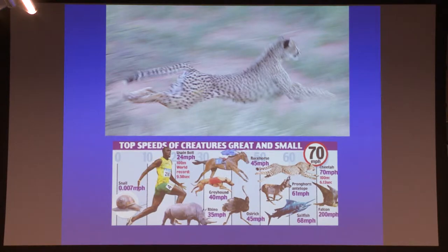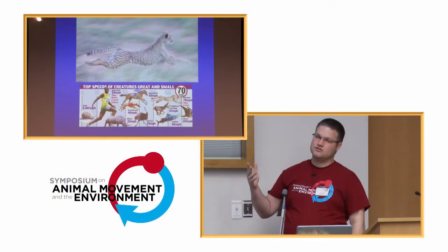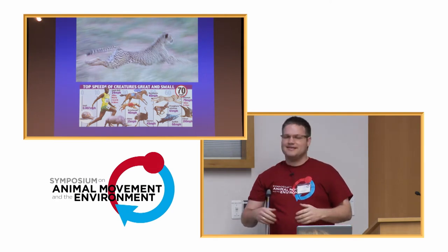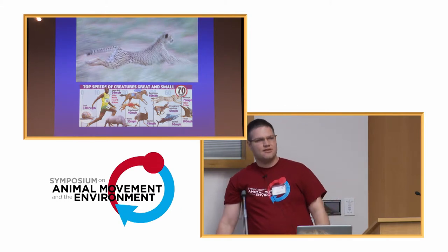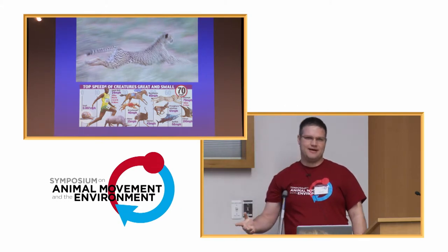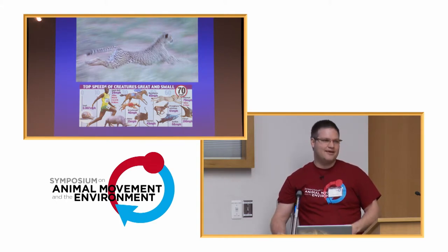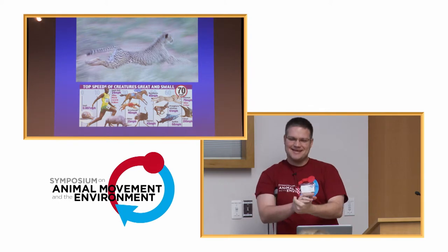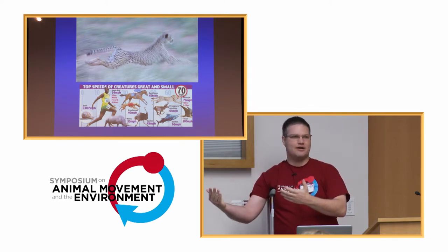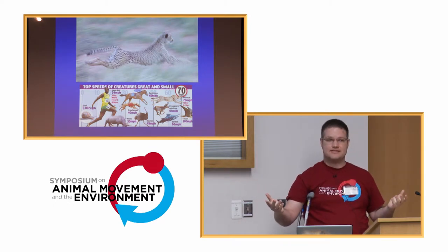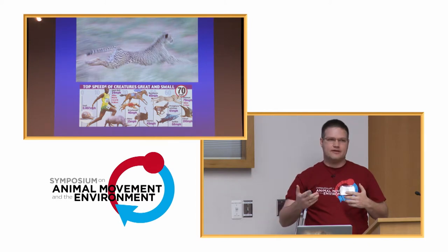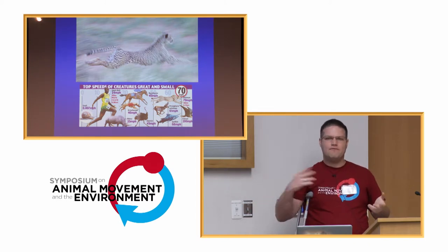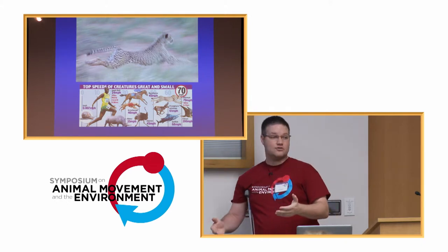We know cheetahs are fast — there are videos all over National Geographic where they chase down prey in blistering speed and it all ends in dust. So we know they're fast, or do we? The reality is that the estimation of cheetah speed in the wild is actually pretty bad. There's one estimate from the late 1950s from a Disney movie where they used frames per second to estimate speed. There are also estimates from captivity, but we don't really know how fast they run in the wild. Are they fast, or are they just good at kicking up dust?